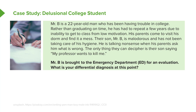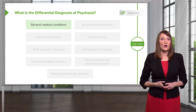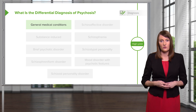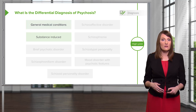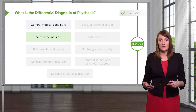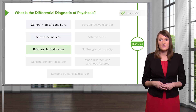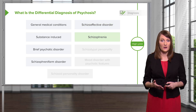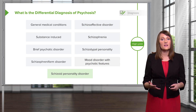You meet Mr. B in the emergency room and start evaluating him. Your differential diagnosis is broad. You're going to consider general medical conditions first — I can't overemphasize this enough: whenever considering a psychiatric disorder, you must always consider medical conditions first, as they're easy to treat and more likely to be reversible. Also consider whether symptoms are substance-related. Beyond that, think of psychiatric disorders like brief psychotic disorder, schizophreniform disorder, schizoaffective disorder, schizophrenia, schizotypal personality disorder, a mood disorder with psychotic features, and schizoid personality disorder.